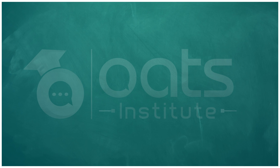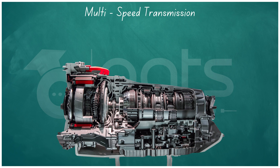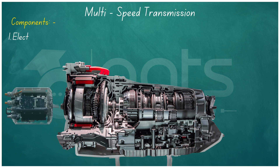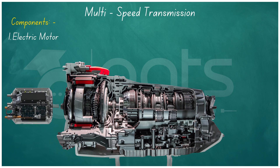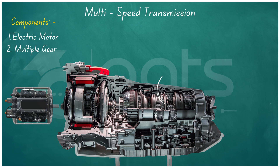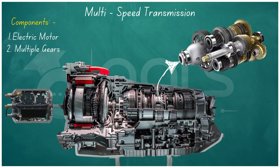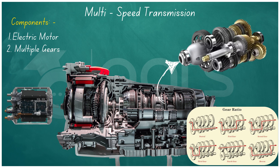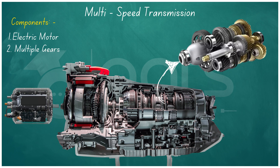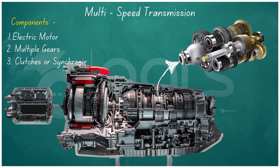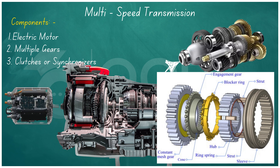A multi-speed transmission, also known as a multi-speed gearbox, is a component in some electric vehicles designed to offer multiple gear ratios between the electric motor and the wheels. Unlike single-speed transmissions with a fixed gear ratio, multi-speed transmissions provide the ability to change between several gear ratios. A multi-speed transmission consists of three main components: the electric motor, which generates power from the battery and operates within a wide range of speeds; multiple gears of varying sizes designed to engage with the motor's output shaft and the drive wheels; and clutches or synchronizers, which help smoothly engage or disengage one gear while selecting another.